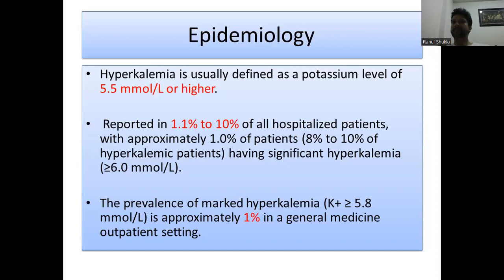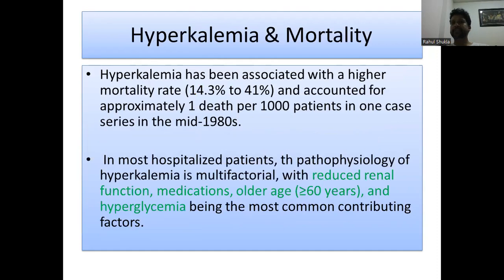Regarding the epidemiology of hyperkalemia, it is defined as potassium more than 5.5 millimoles per liter, reported in 1.1 to 10 percent of all hospitalized patients, with approximately 1 percent having significant hyperkalemia greater than 6 millimoles per liter. Prevalence of mild hyperkalemia above 5.8 millimoles per liter is approximately 1 percent in general medicine outpatients.